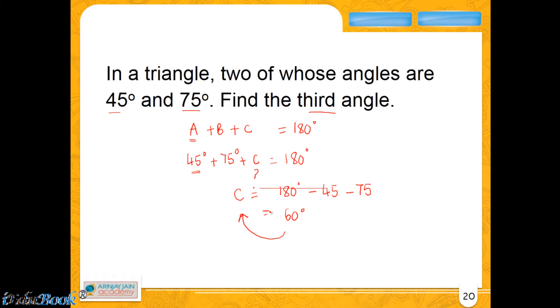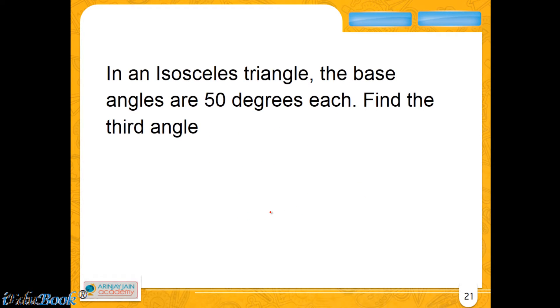In an isosceles triangle - what is an isosceles triangle? Do you recall what we learned in the previous video? If not, you may just go back and learn about it. An isosceles triangle is a triangle in which the base angles are equal. So in an isosceles triangle, the base angles are 50 degrees each, which means that one is 50, the other one is 50. Find the third angle.